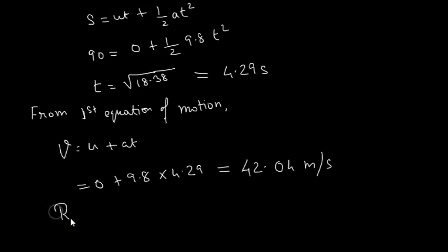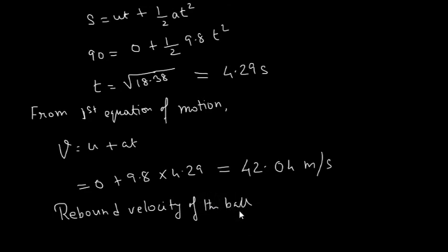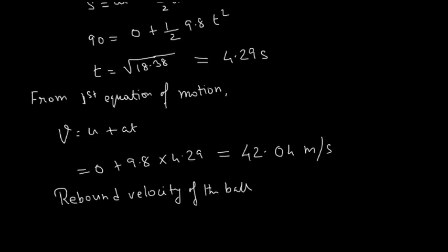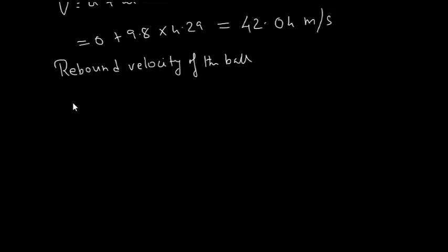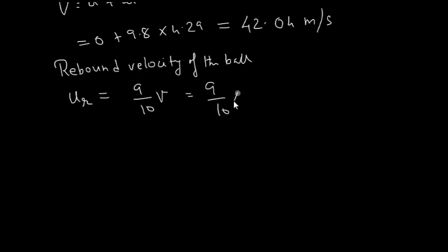Now for rebound one, the velocity of the ball after the first collision is U_R = (9/10) × v, as given in the question. So U_R = (9/10) × 42.04, which equals 37.84 meters per second.